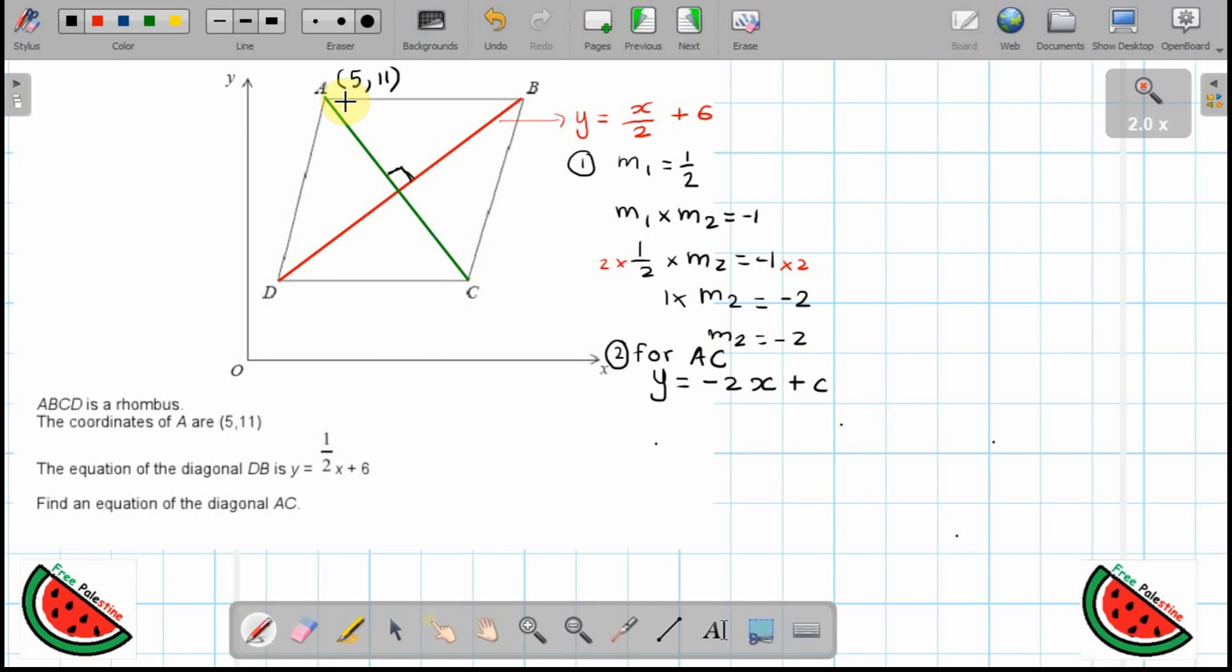I know the point A has coordinates 5, 11, so I'm going to substitute these coordinates. So when x equals 5, y equals minus 2x plus c. That'll be 11 equals minus 10 plus c. And then I add 10 to both sides, so c equals 21.